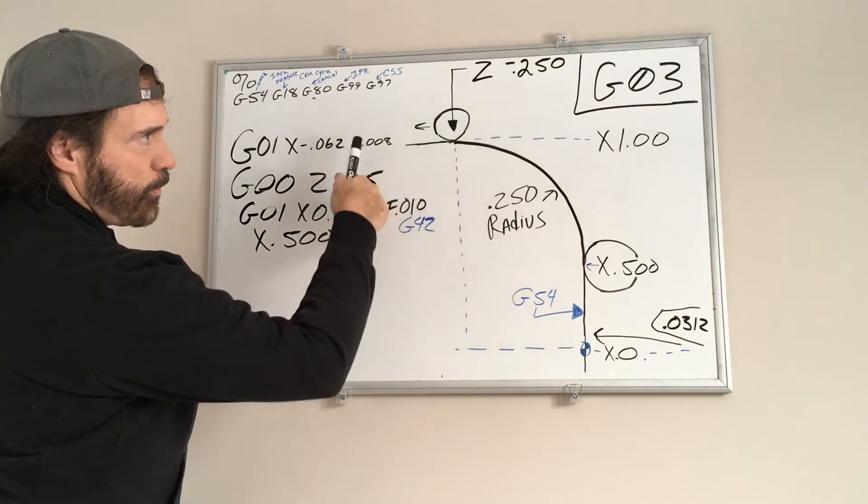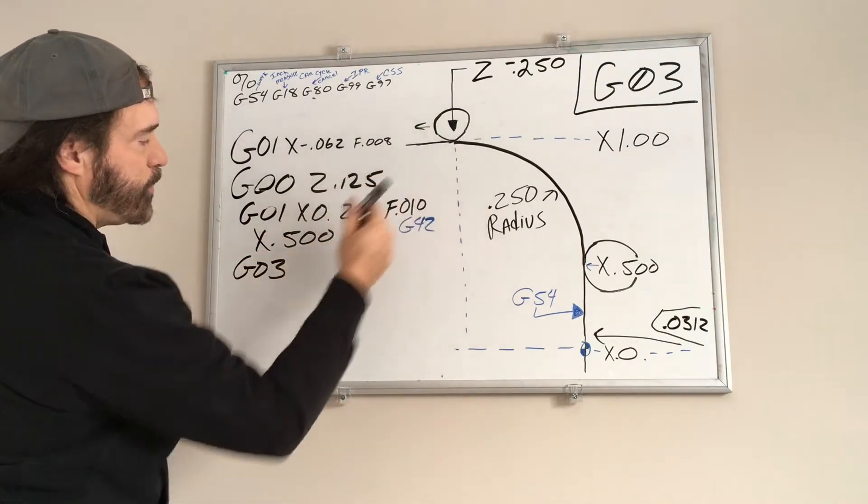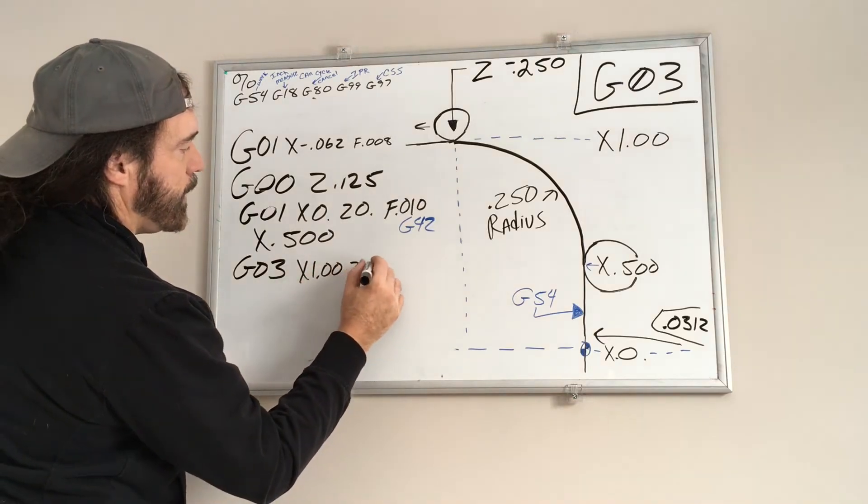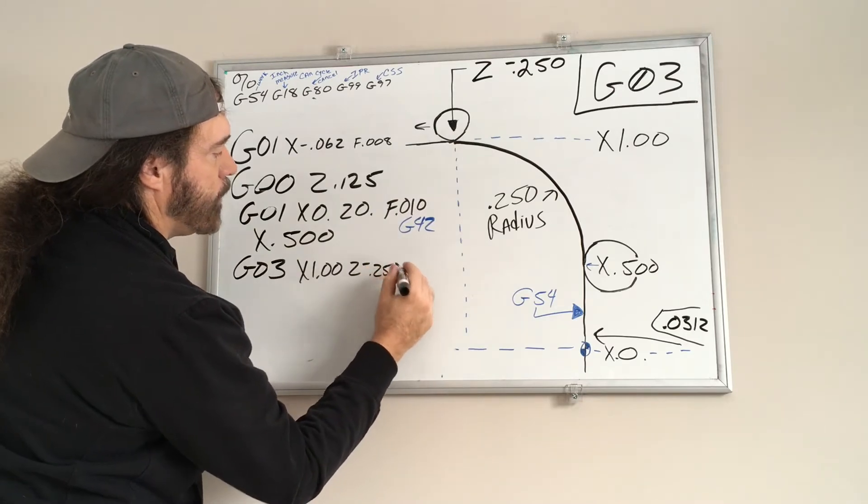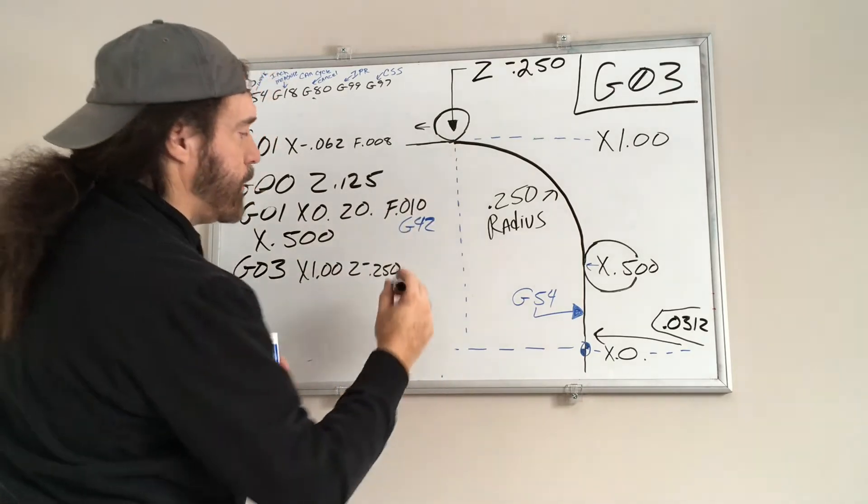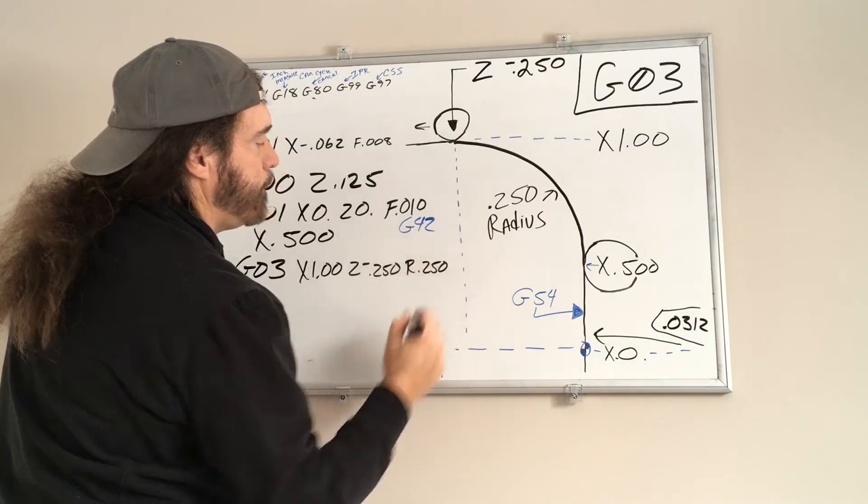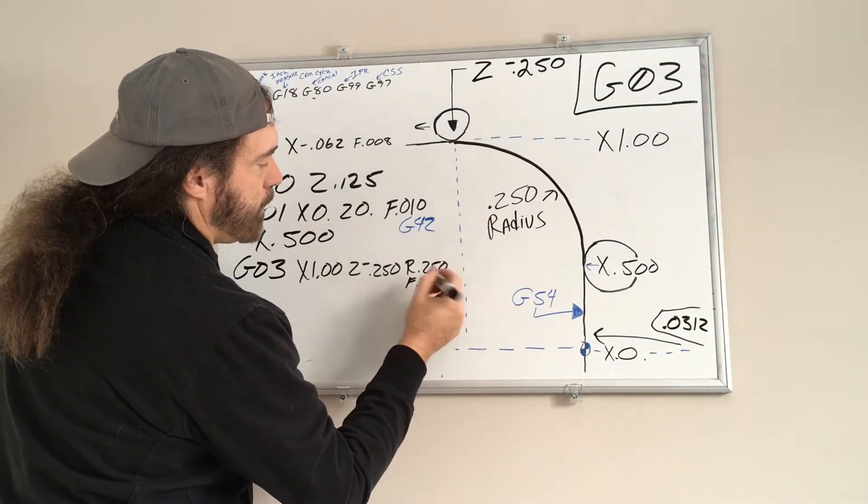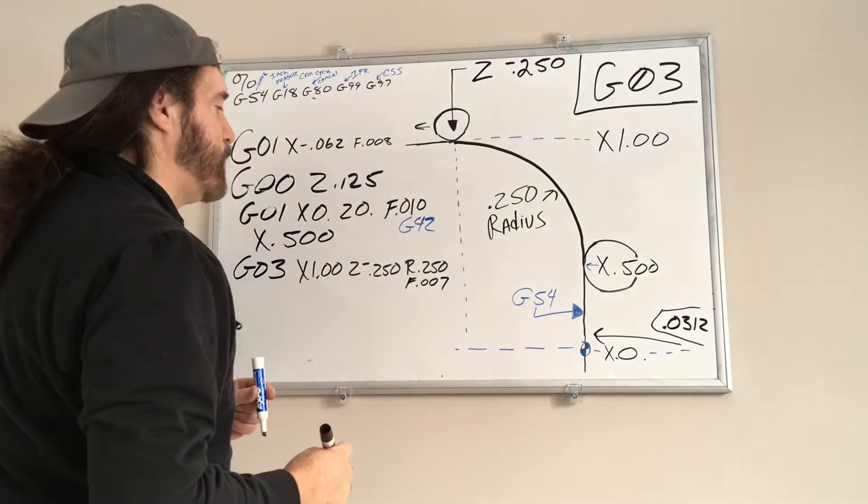And we'll keep the feed rate the same. Now we're going to do a G03. And I want to go up to X 1.0, Z negative 250. R, because you have to have an R value, 0.250. And we'll slow the feed rate down a little bit. We'll squeeze this and we'll put it down to 7 thousands per revolution.